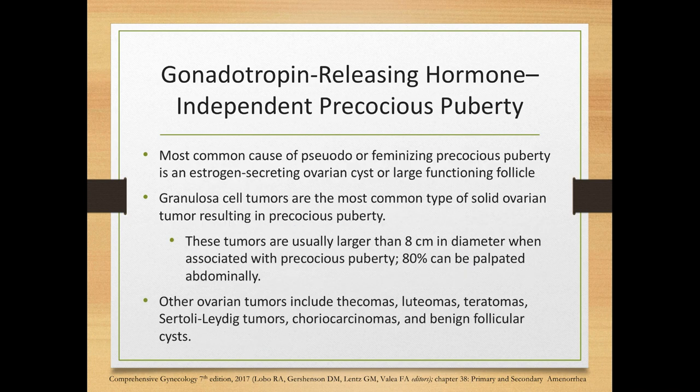The most common cause of pseudo- or feminizing precocious puberty is an estrogen-secreting ovarian cyst or large functioning follicle. Granulosa cell tumors are the most common solid ovarian tumor resulting in precocious puberty — usually larger than 8 centimeters in diameter and palpable abdominally in 80% of cases. Other ovarian tumors include thecomas, luteomas, teratomas, Sertoli-Leydig tumors, choriocarcinomas, and benign follicular cysts.